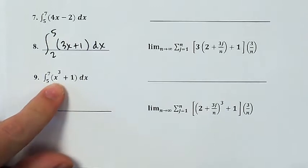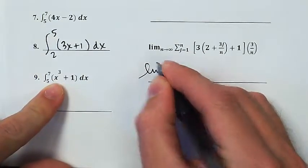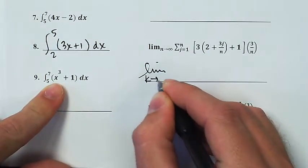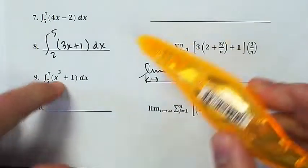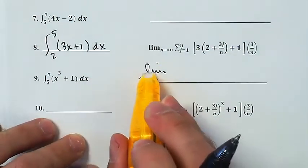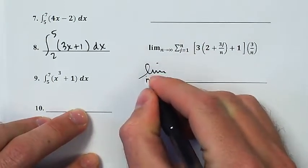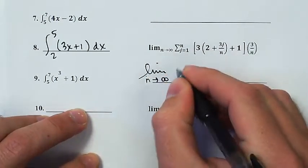And then this one, integral from 5 to 7. I'm going to take the limit as, maybe I'll use k as my, no, pardon me. I am going to use k as my index. This is still the limit as the number of rectangles n goes to infinity.